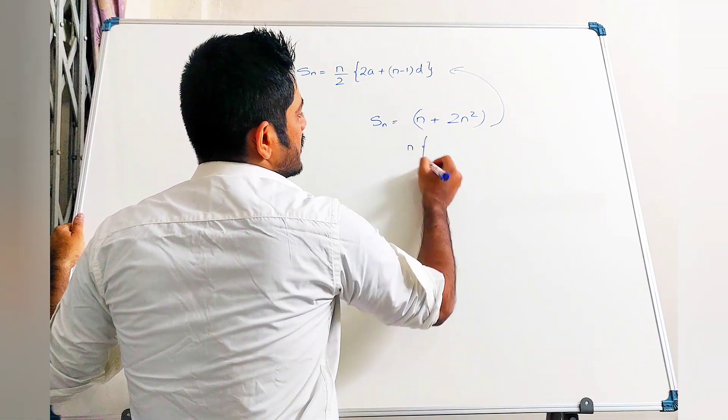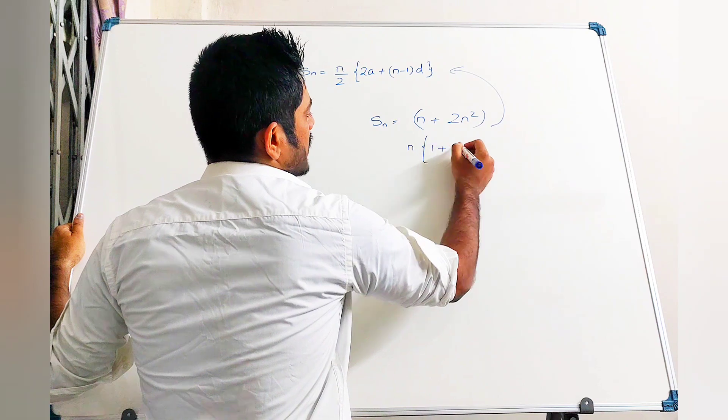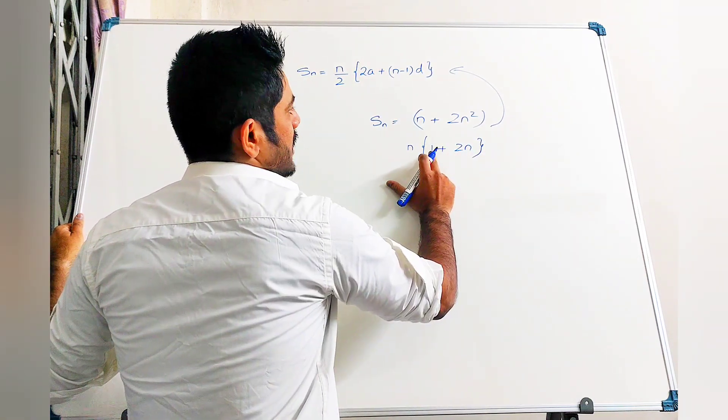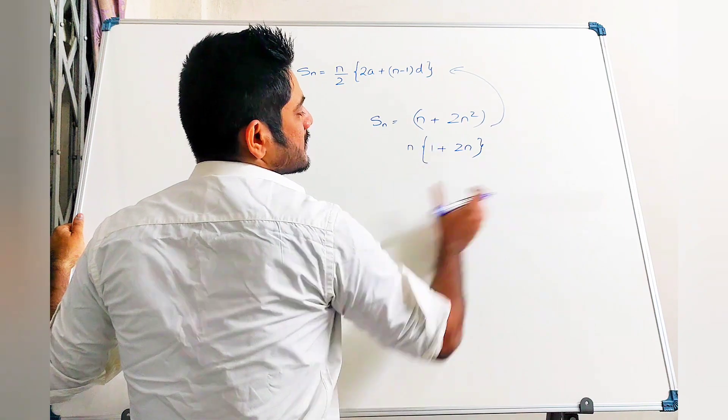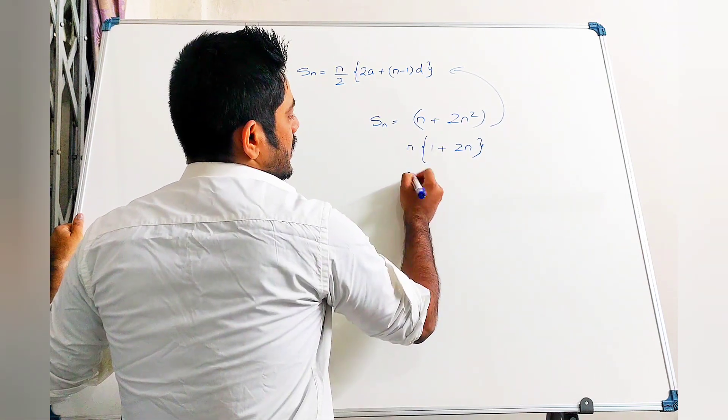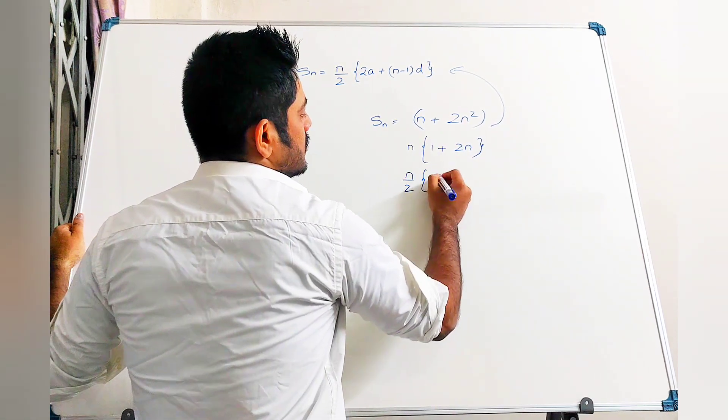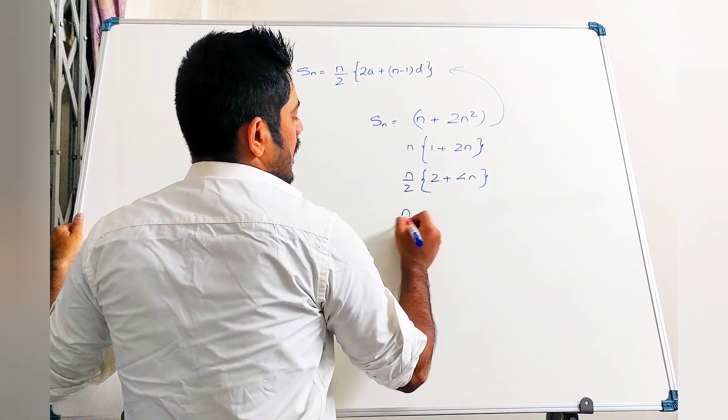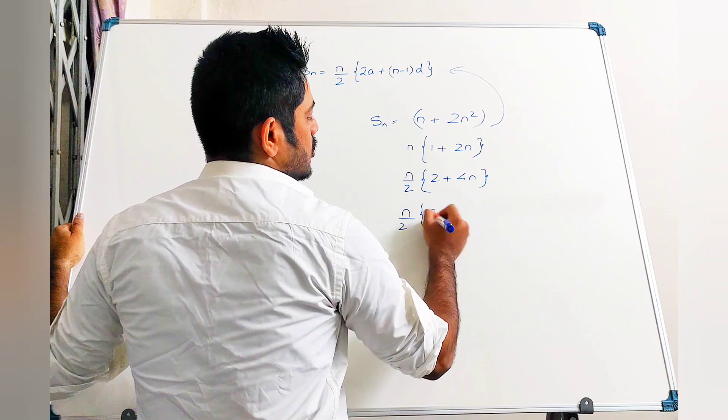I'll take n common firstly, so I get 1 plus 2n. Now this should be in the form of 2a plus n minus 1 into d. I'll multiply and divide by 2, so this becomes 2 plus 4n. I'll adjust to 2.